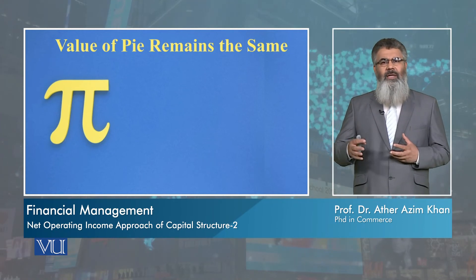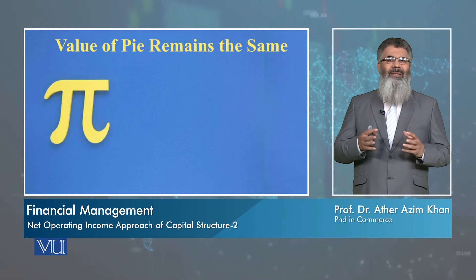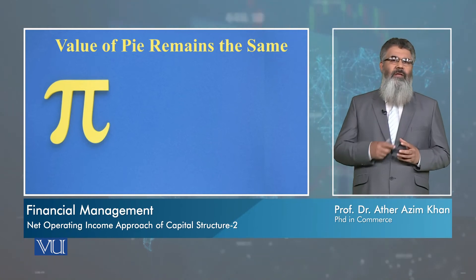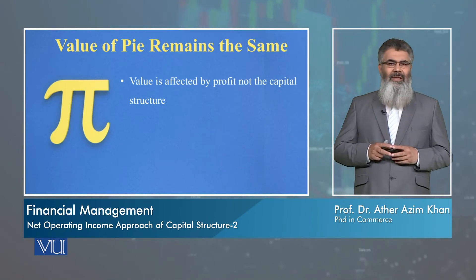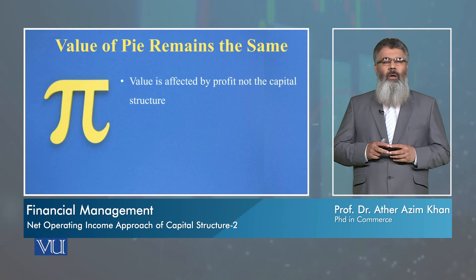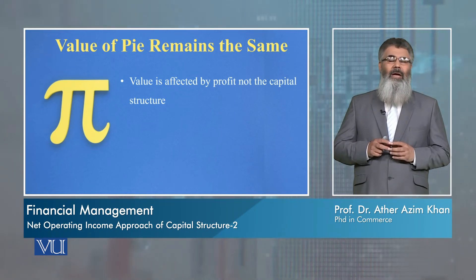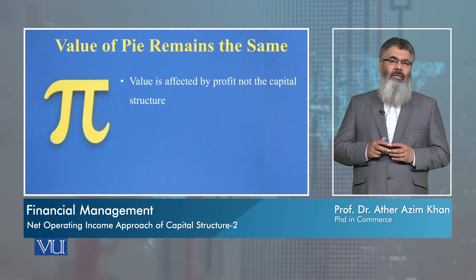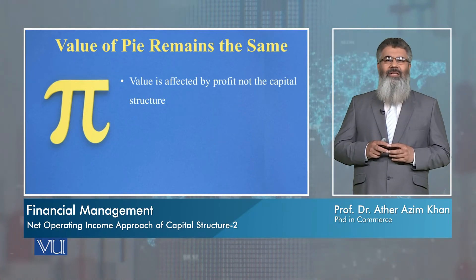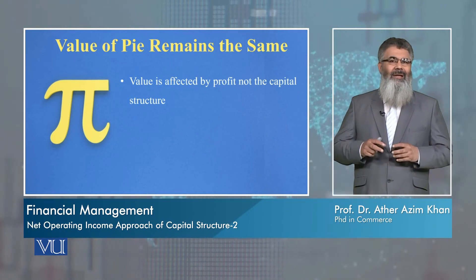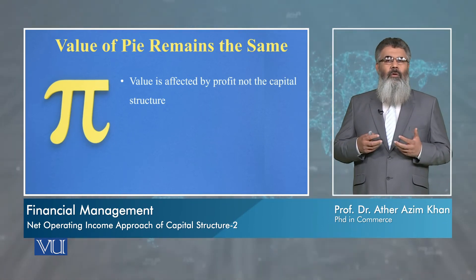So if we increase debt or decrease debt, or increase or decrease equity, the proportion would change but the sum of the two will always be the same. This results in the conclusion that the value of a firm is affected by its profit and not by the capital structure. Capital structure does not affect the value of the firm because it only changes the proportion — it does not add value.